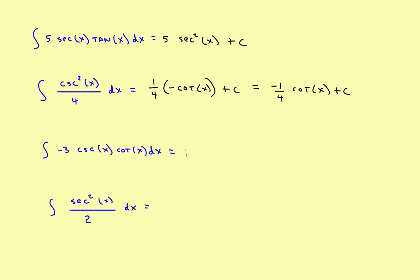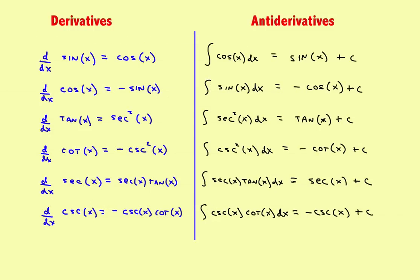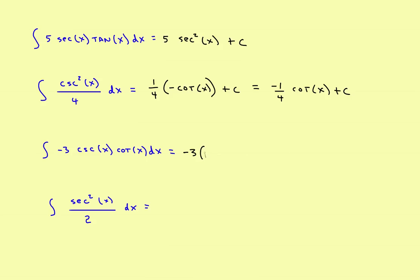For the next one, you've got the constant negative 3. The antiderivative of cosecant cotangent is negative cosecant of x. So this becomes negative 3 times negative cosecant of x plus c. Two negatives make a positive, so the final answer is 3 times cosecant of x plus c.